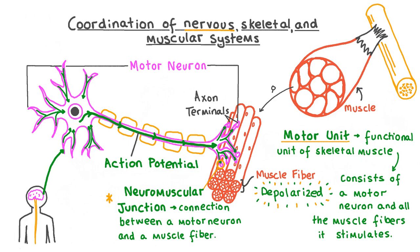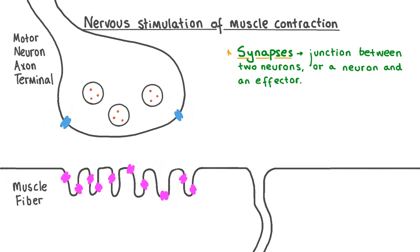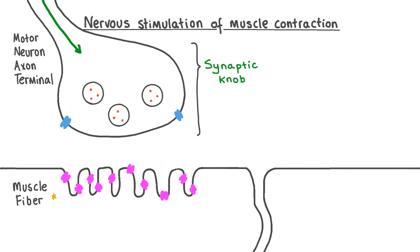Let's take a closer look at a neuromuscular junction. The way that neurons pass messages to muscle fibres is similar to how neurons pass messages to each other, as they both occur at synapses. Synapses are junctions between two neurons or between a neuron and an effector like a muscle fibre. A stimulus from the brain or spinal cord first generates an action potential which propagates to the axon terminals at the end of a motor neuron. The region at the end of the axon terminal is called a synaptic knob.